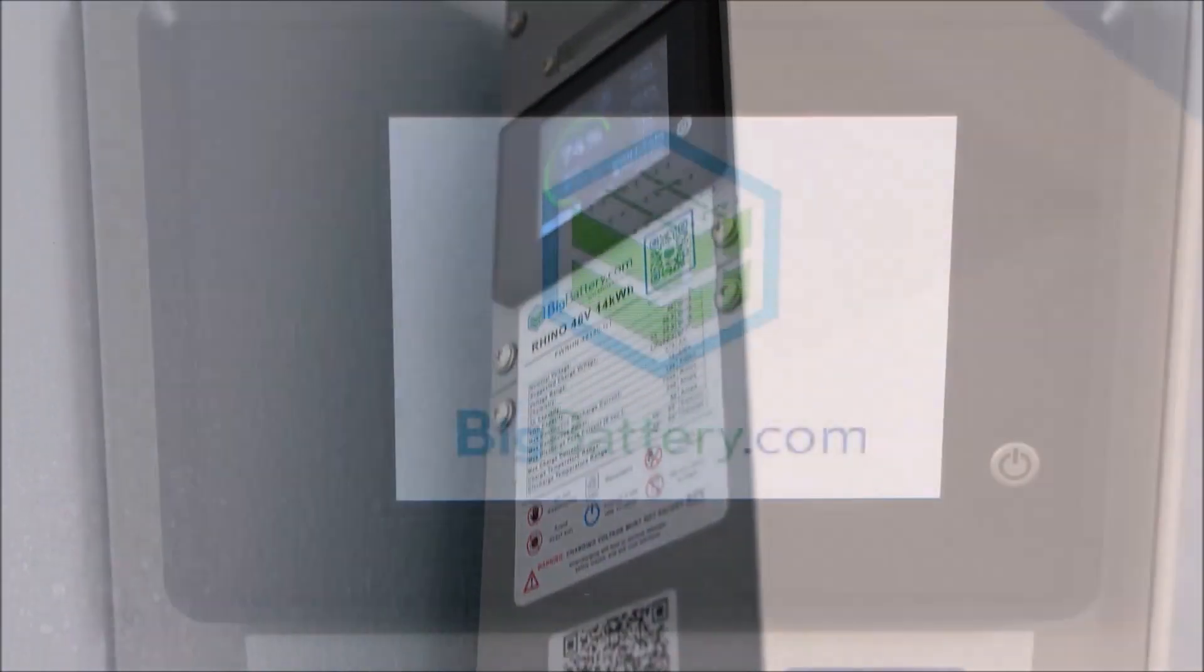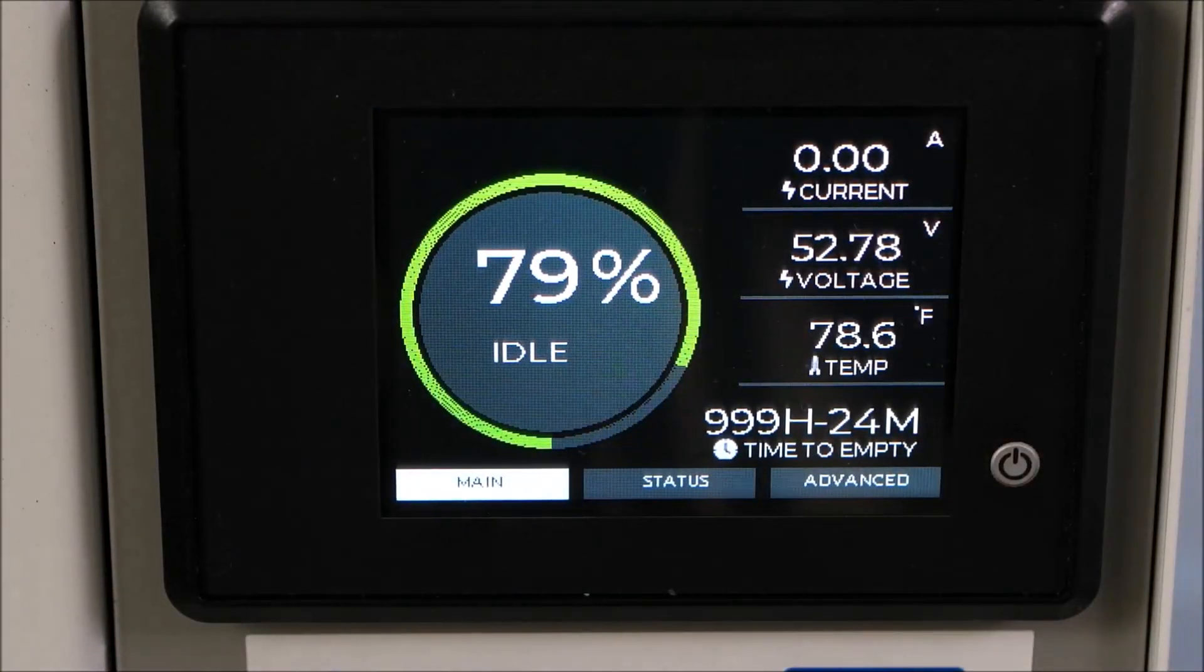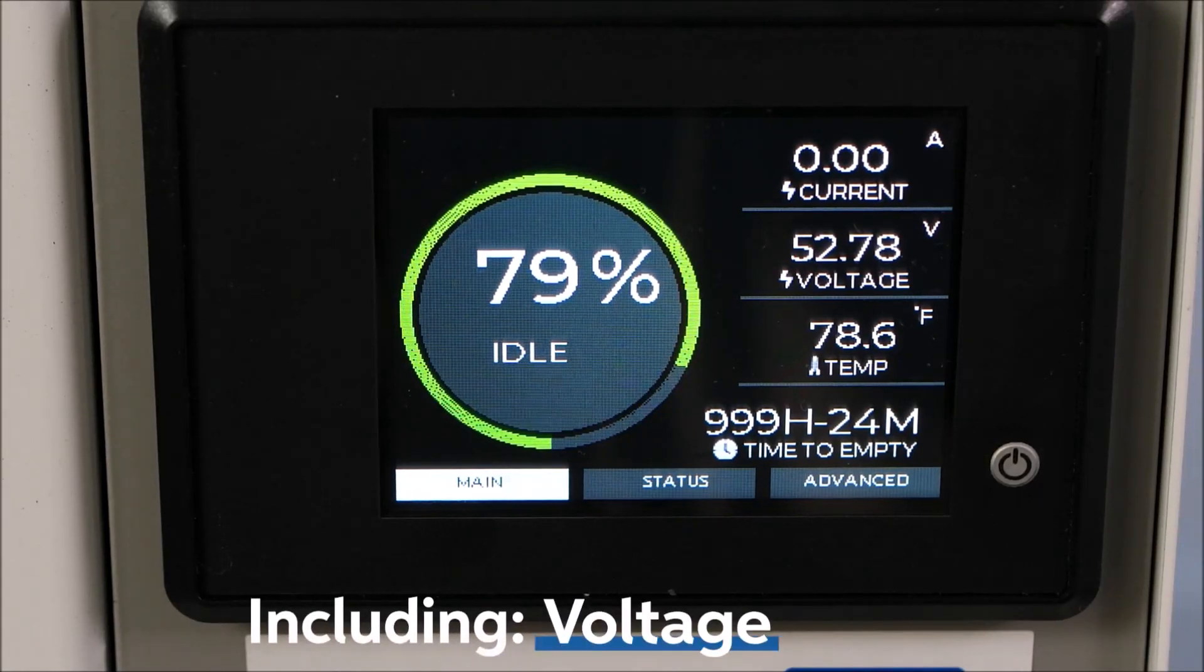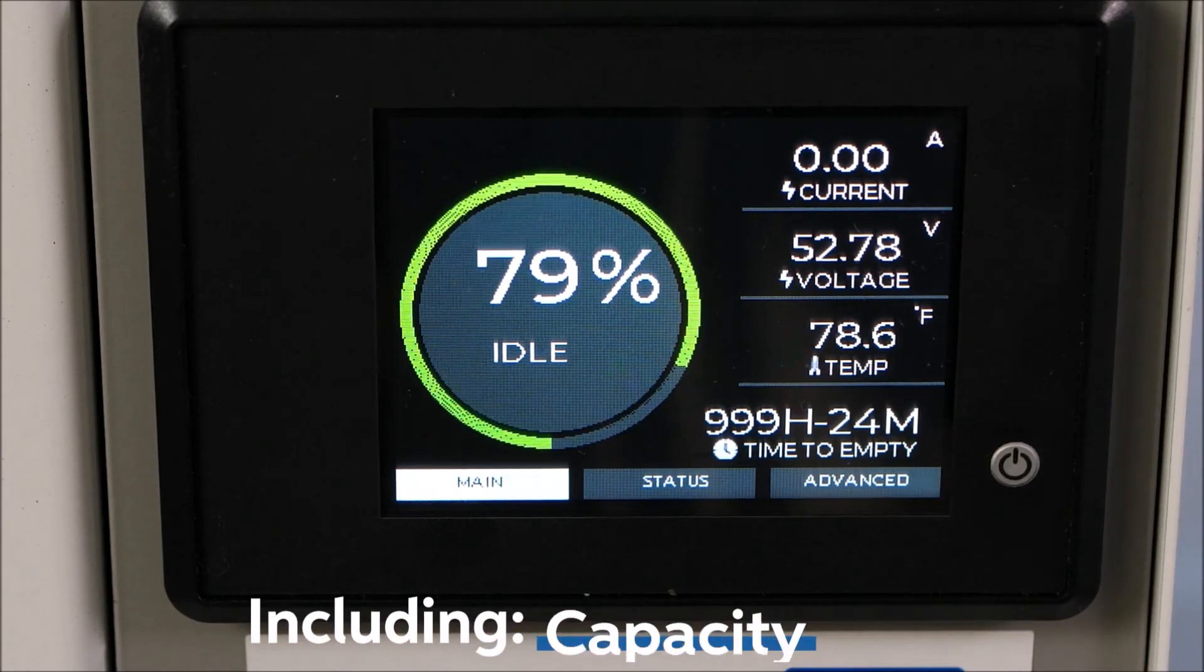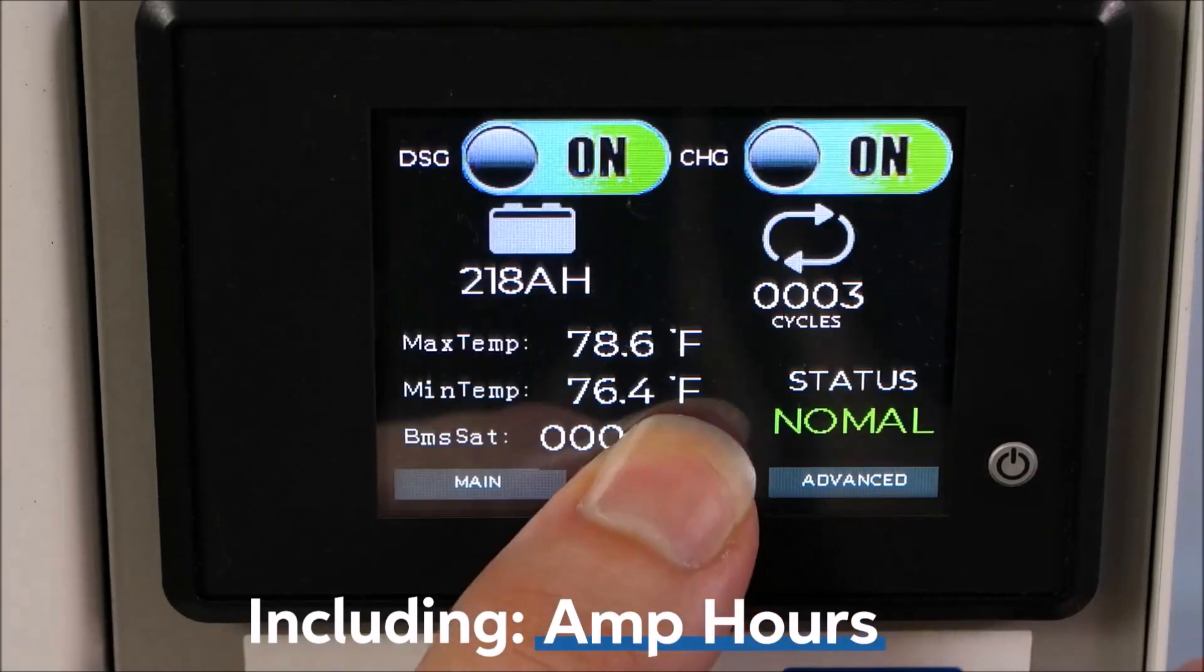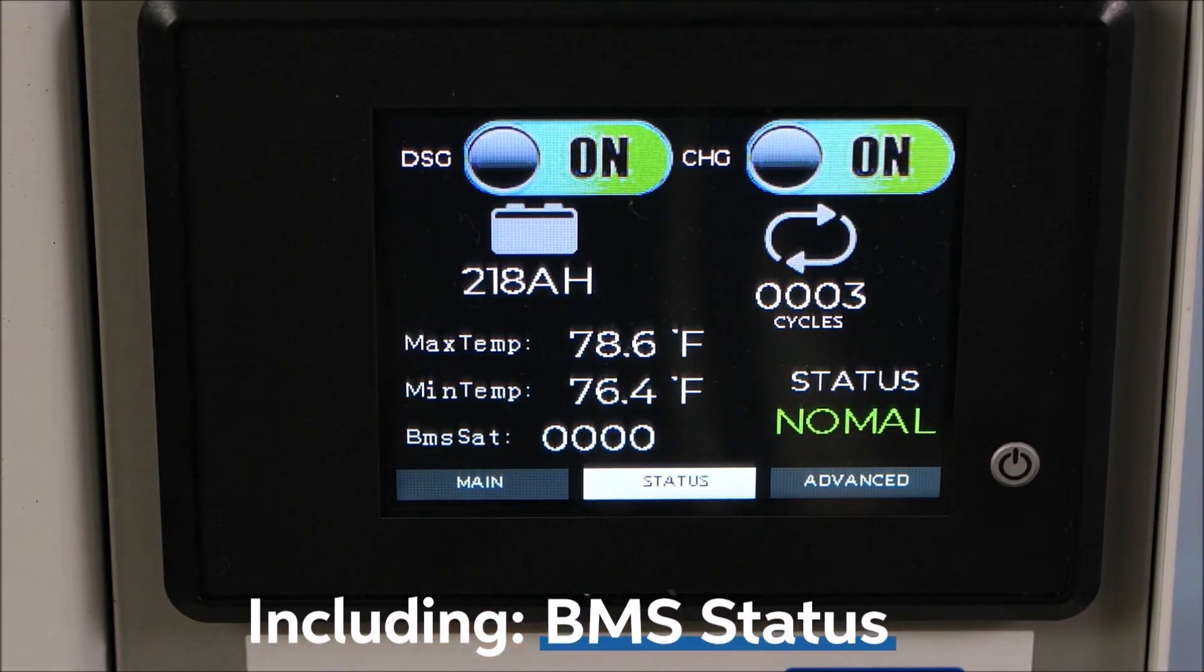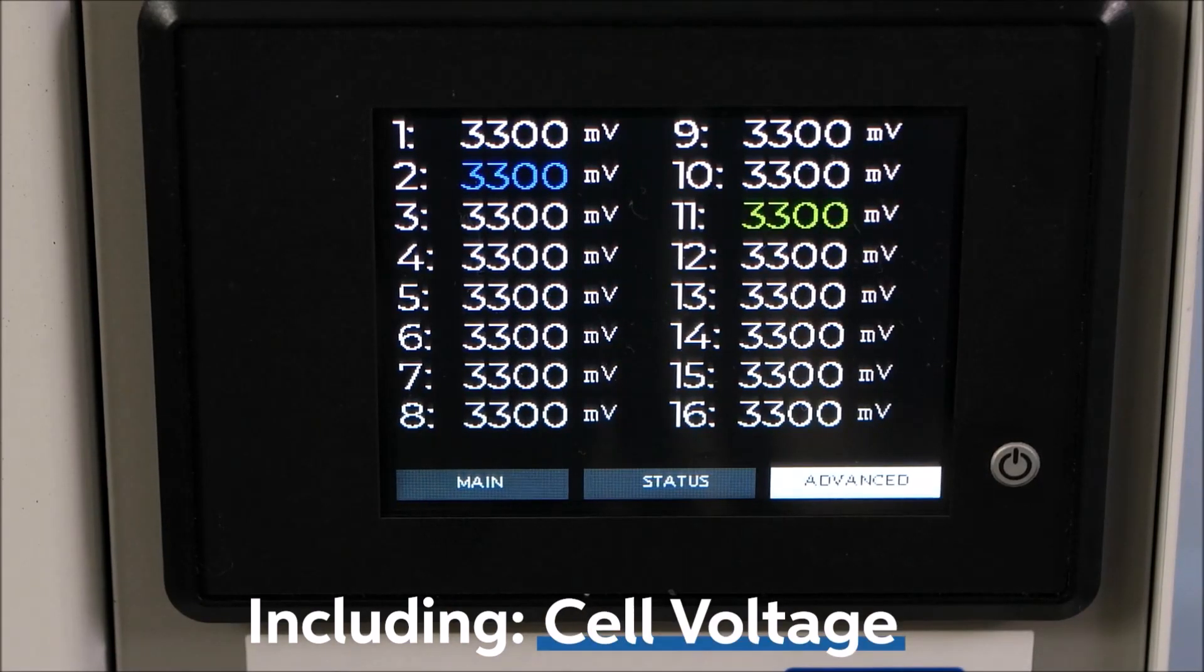But that's not all. We've also added a detailed LED smart display on the side of the unit for monitoring the status of your battery, including voltage, current, temperature, remaining capacity, total amp hours discharged, cycle count, BMS status codes which can be found in your user manual, individual cell voltages, and more.